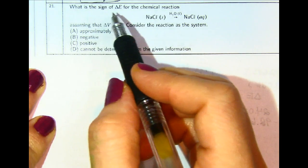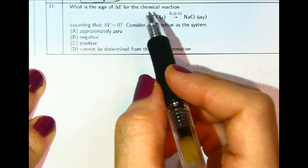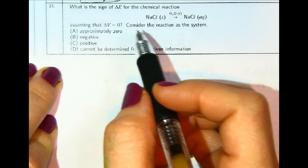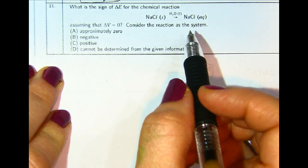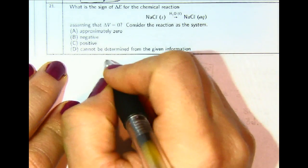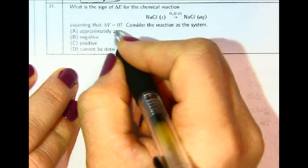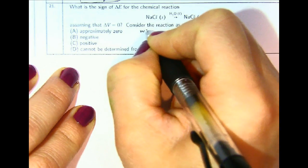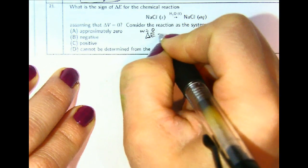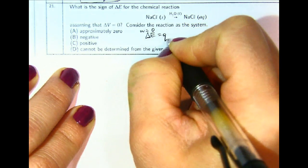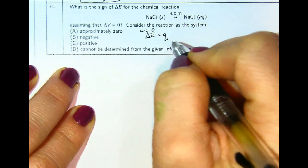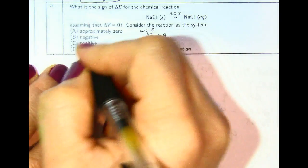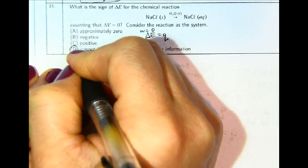Number 21: what is the sign of delta E for this chemical reaction, assuming delta V equals zero? Consider the reaction as the system. Since delta V equals zero, work equals zero, and therefore delta E equals Q. However, since we have no indication of what Q is, we cannot determine the answer from the given information.